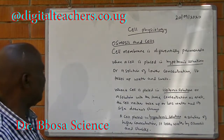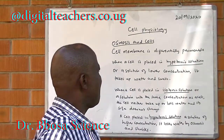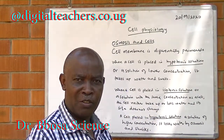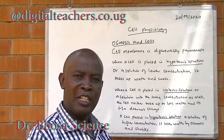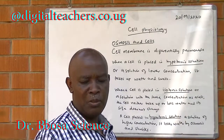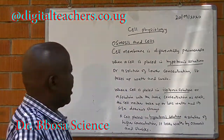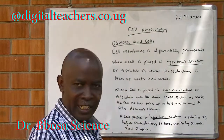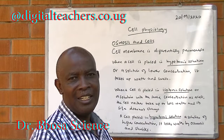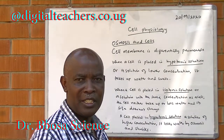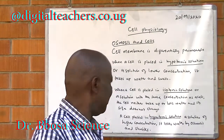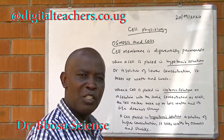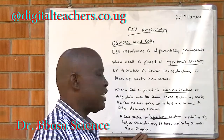Osmosis and the cell. The cell membrane acts as the semipermeable membrane. When the cell is placed in a hypotonic solution — a solution of lower concentration than the cell — the cell will take up water by osmosis and swell, becoming bigger. When the cell is placed in an isotonic solution — a solution with the same concentration as the cell — the cell will neither take up nor lose water by osmosis.